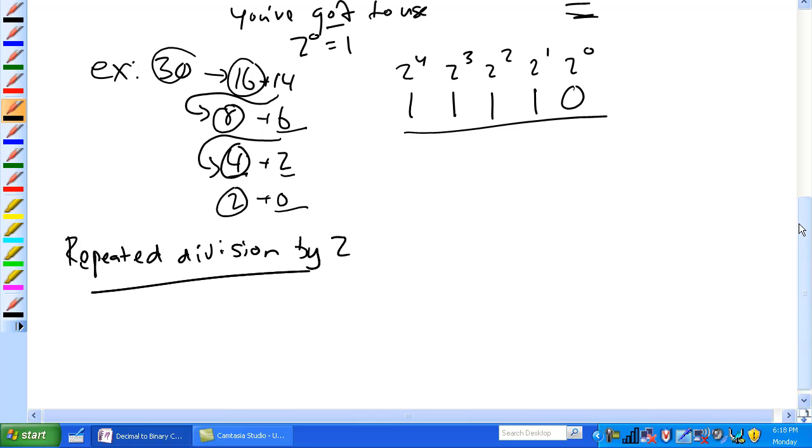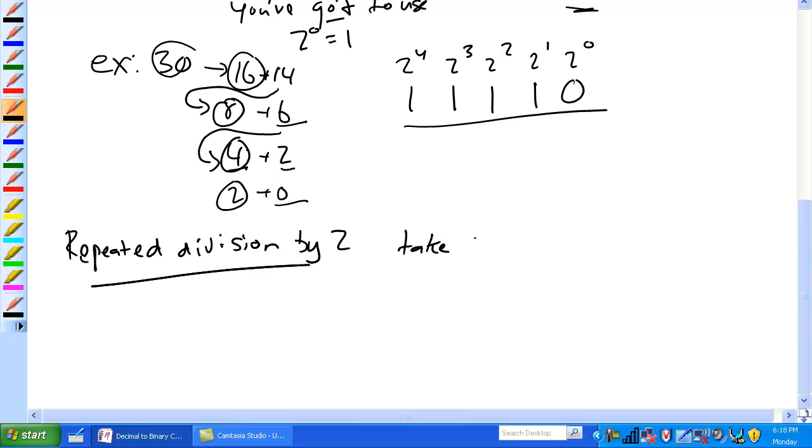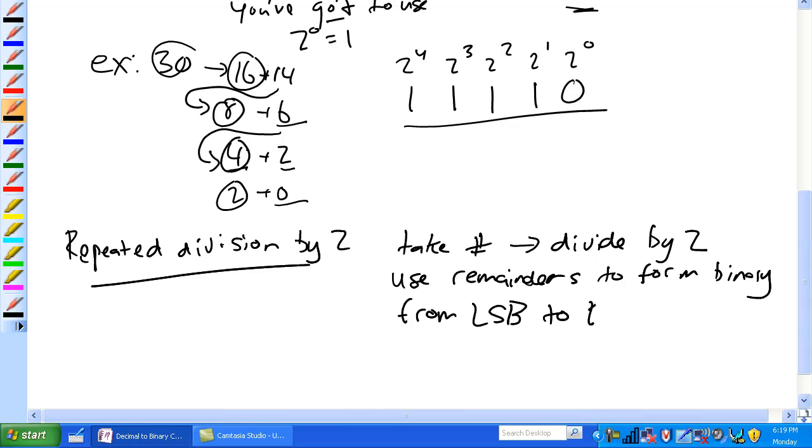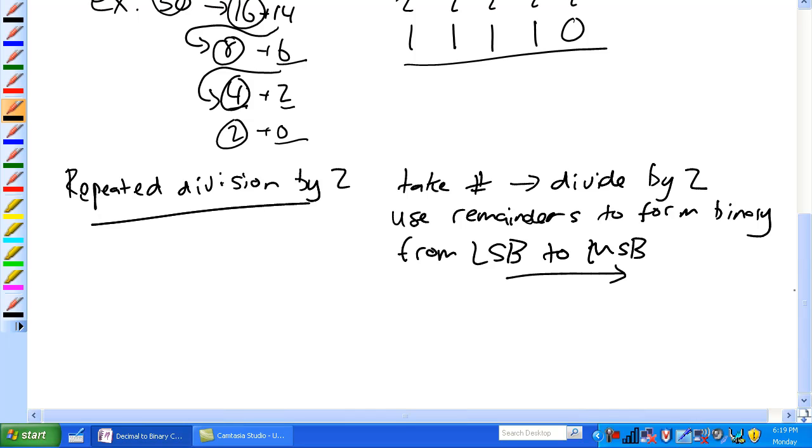Repeated division by 2, all you do is take the number of interest, divide by 2, hence the name. Basically, use the remainders to form the binary equivalents from LSB to MSB, it's got to go in that direction. I'll show you how to do it. Let's see, 55. Remember LSB to MSB, so LSB is the one that's closest to the decimal place.